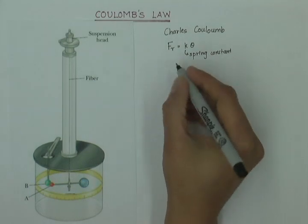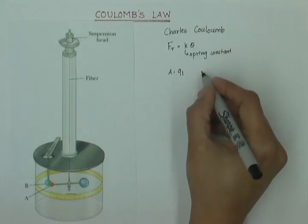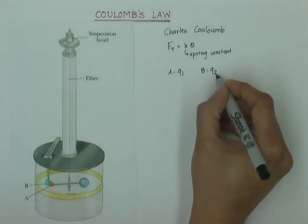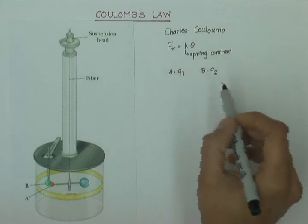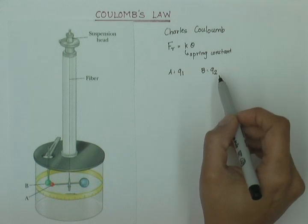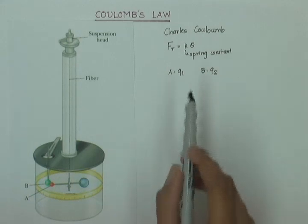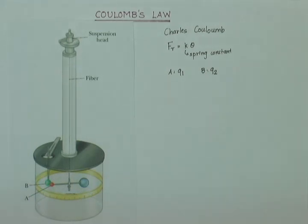He put a charge of a known quantity Q1 on A and another charge of the known quantity and same polarity on B. By same polarity what we mean is that if Q1 is positive, Q2 was also positive. And if Q1 was negative, Q2 would also be selected as negative. So they both had the same polarity but different magnitudes. And he inserted B into the apparatus near A. Now, since A and B are of like polarity, there will be repulsion between them and the ball A will move away.